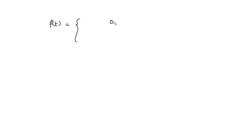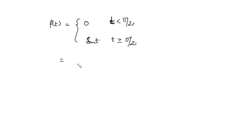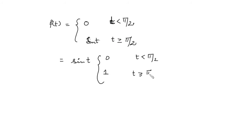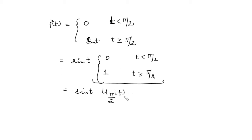If we have any piecewise continuous function, we can express it in terms of the unit step function. For example, suppose before π/2 the function is 0 and after π/2 the function is sin(t). We can express this piecewise continuous function in terms of the unit step function by writing it as sin(t) times u(t - π/2). Any piecewise continuous function can be expressed in terms of the unit step function.